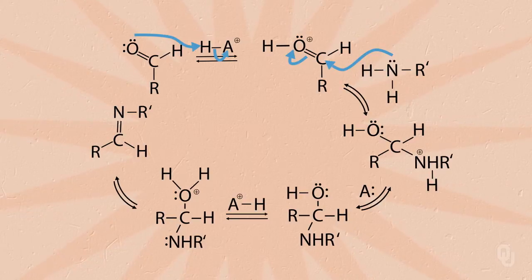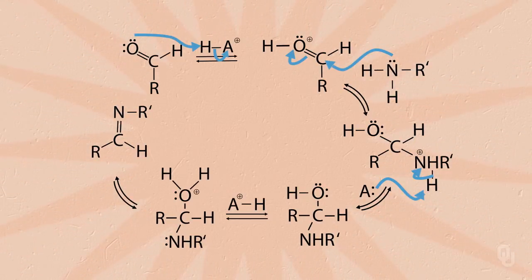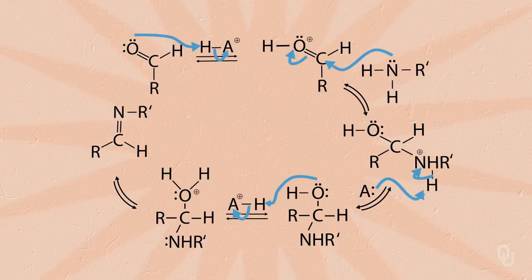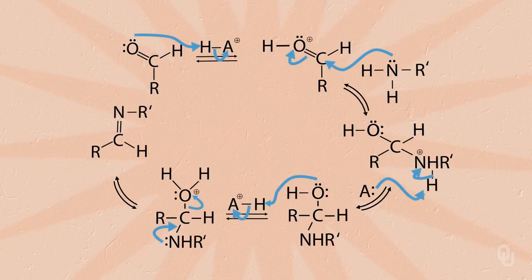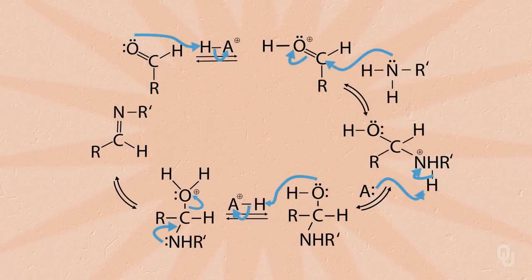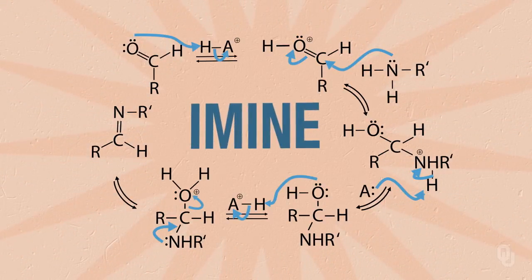At this point we need to do a couple of proton transfers. We use any component with a lone pair — like the conjugate base of our acid — to pull off the proton and give the electrons back to the nitrogen. Then we do another proton transfer to the oxygen of the hydroxyl group, picking up a proton to give us a protonated hydroxyl, or water. Water is a great leaving group, so it leaves. The lone pair on the nitrogen comes back in and kicks off the water, giving us an imine — a carbon-nitrogen double bond. In this first step of the Maillard reaction we've replaced the carbon-oxygen double bond with a carbon-nitrogen double bond.